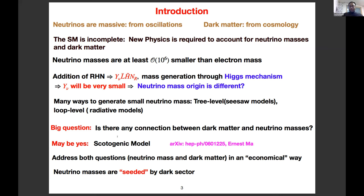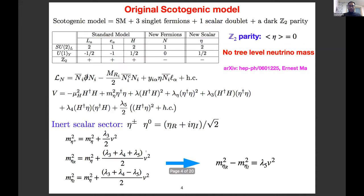The scotogenic model can address both neutrino mass and dark matter in a very economical way — neutrino masses are seeded by the dark sector. The original scotogenic model is a Standard Model extension with three singlet fermions N and one scalar doublet eta, both Z2-odd. Because eta is Z2-odd, it will not have a vacuum expectation value, so there is no tree-level neutrino mass. The scalar sector has two components, eta-plus and eta-zero, and the mass difference between eta_R and eta_I is proportional to lambda_5, which plays a crucial role in mass generation.